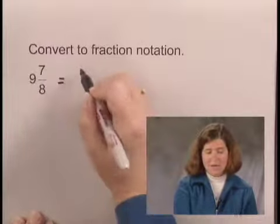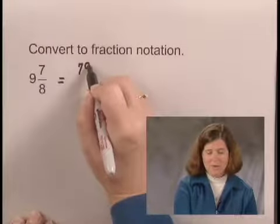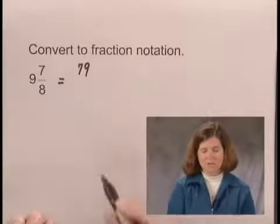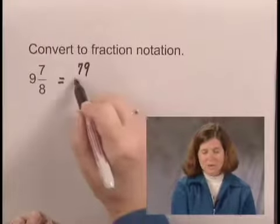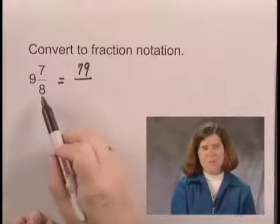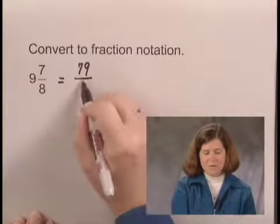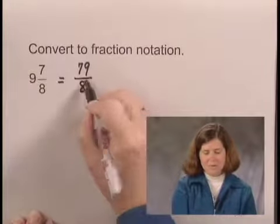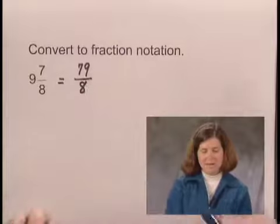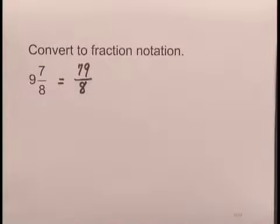79 becomes the numerator of the fraction notation. The denominator is the same denominator we began with, or 8. So 9 and 7 eighths equals 79 eighths.